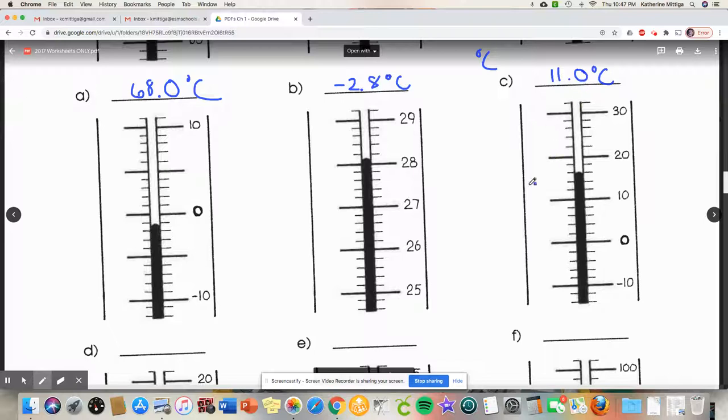It looks like we're going negative here. So these are going by ones, so here's negative one, negative two. It looks like it's right there, maybe a little bit below, so negative 1.1 degrees Celsius.